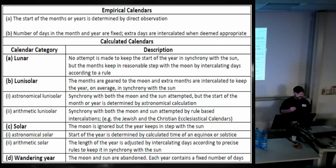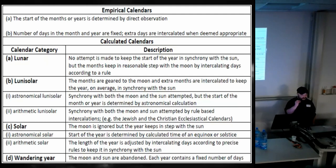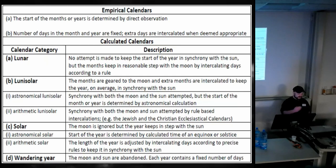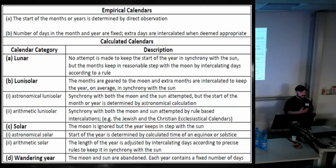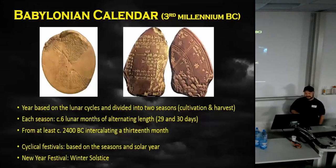Historically, lunisolar calendars are the most frequent in Eurasia — and actually the most common worldwide as well. Our solar calendar we use today is quite unusual on a historical level. It's very improbable that they were using a solar calendar in the Neolithic or Bronze Age; they may have changed to one at some point, but on a historical basis that would be very unusual.